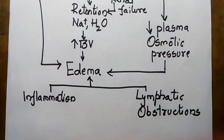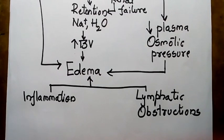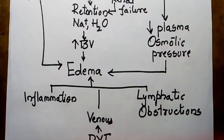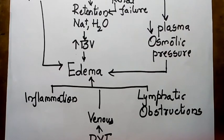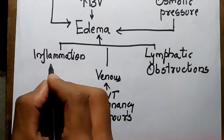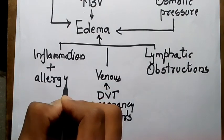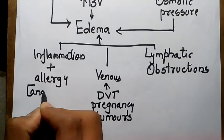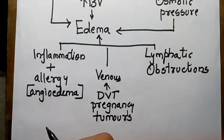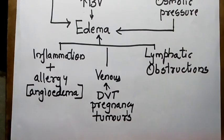Edema may also be present in venous manifestations like DVT, and also due to pressure effects in pregnancy or tumors. Inflammation may also be associated with allergy, as in angioedema, caused by release of inflammatory mediators like histamine.